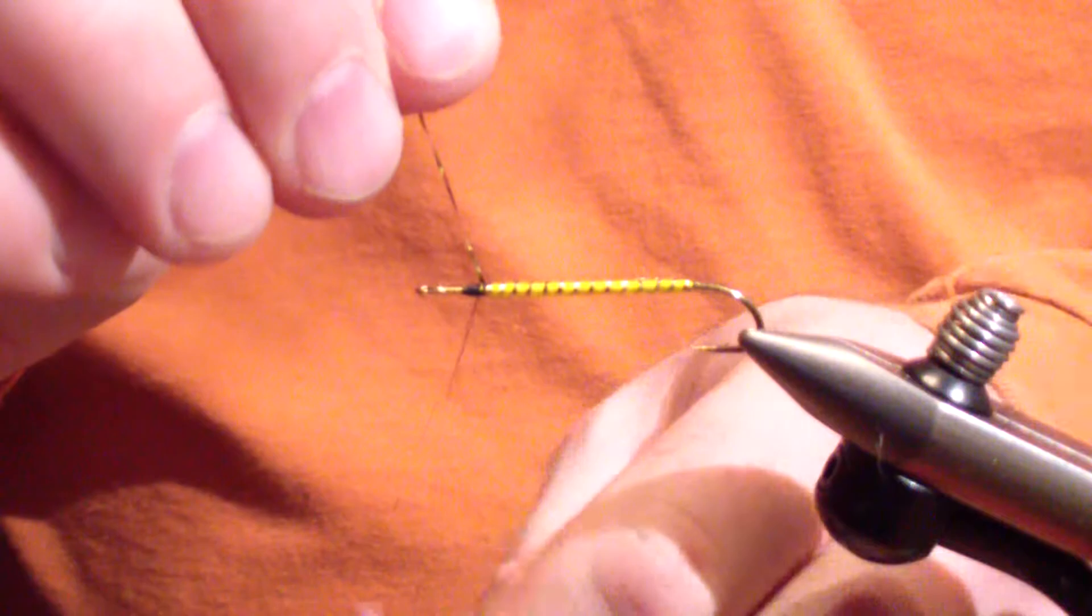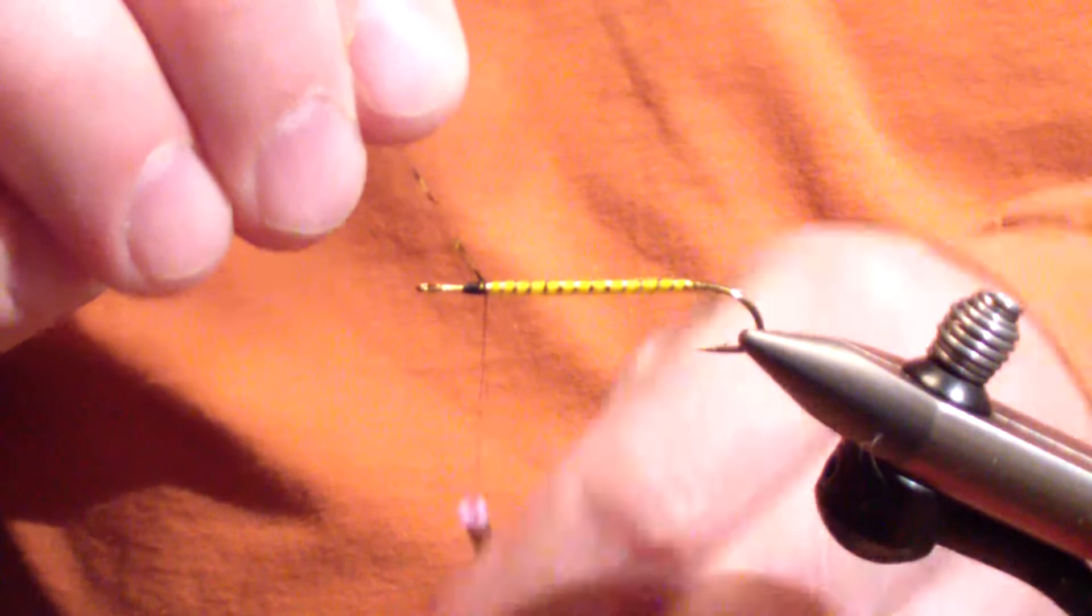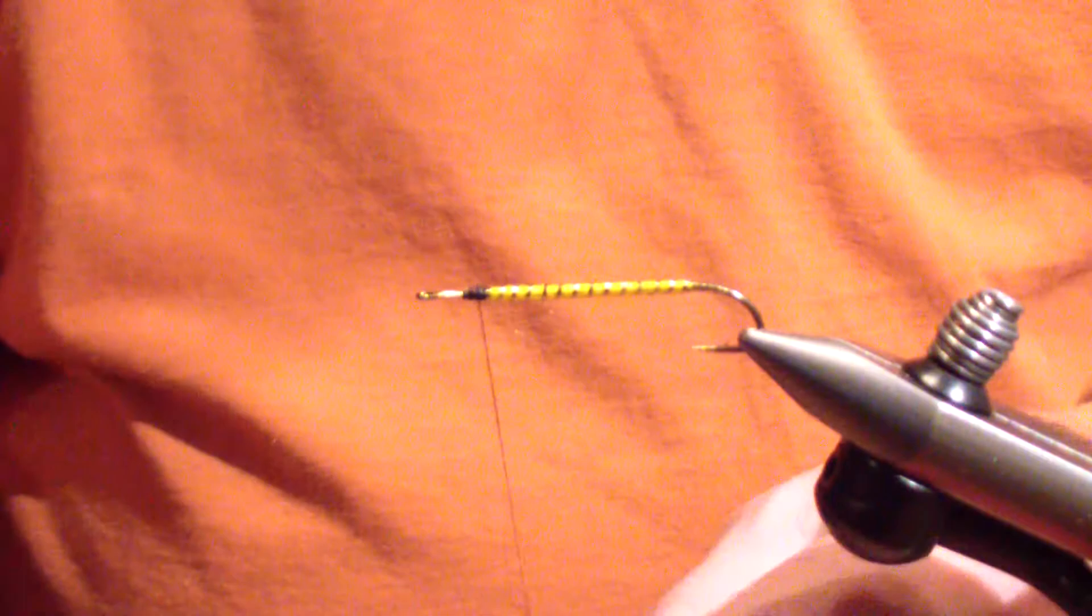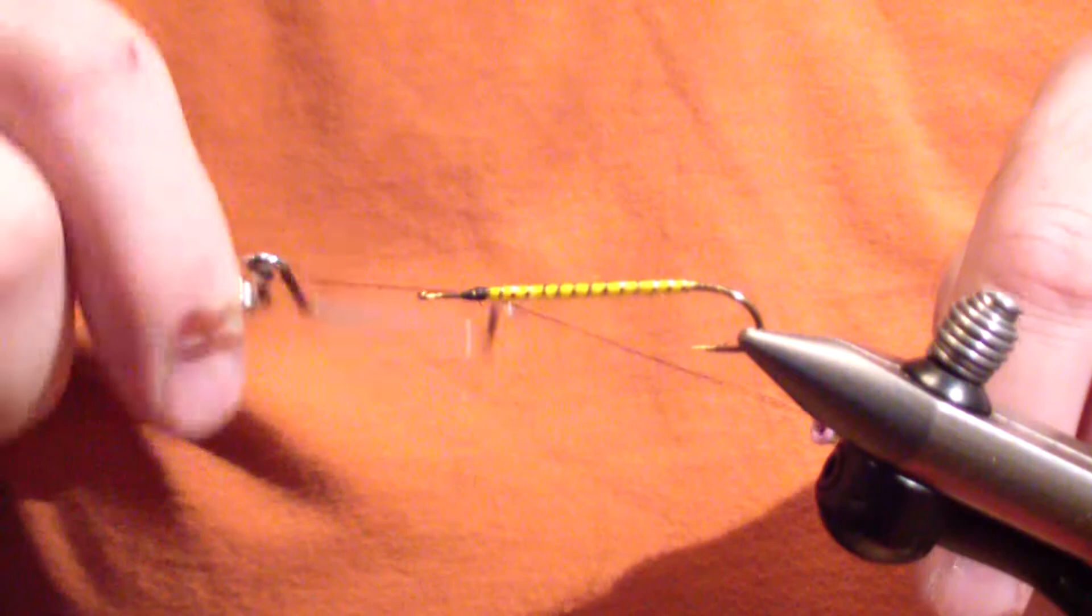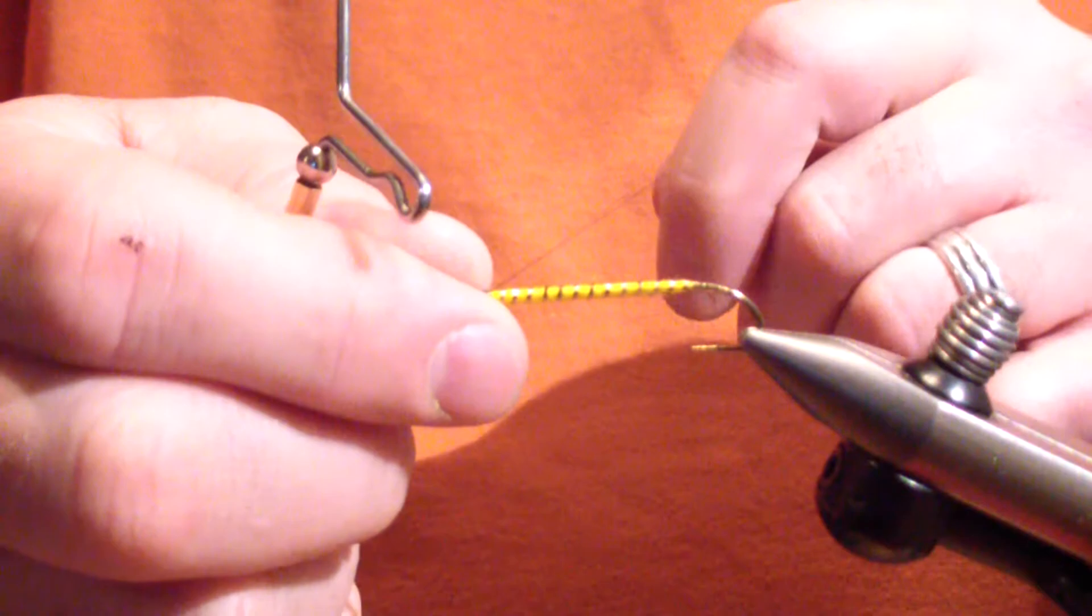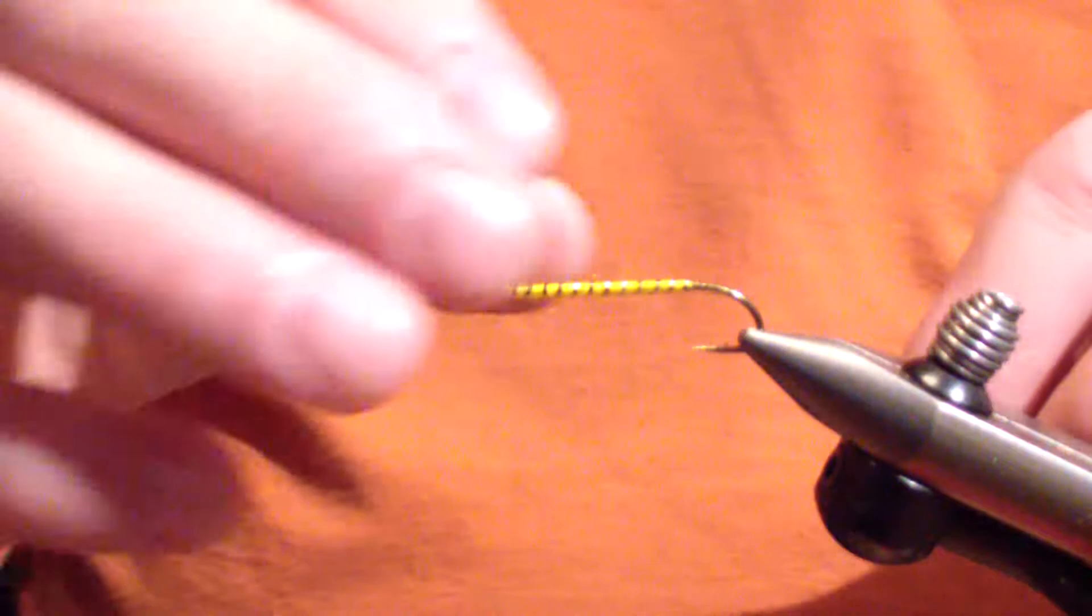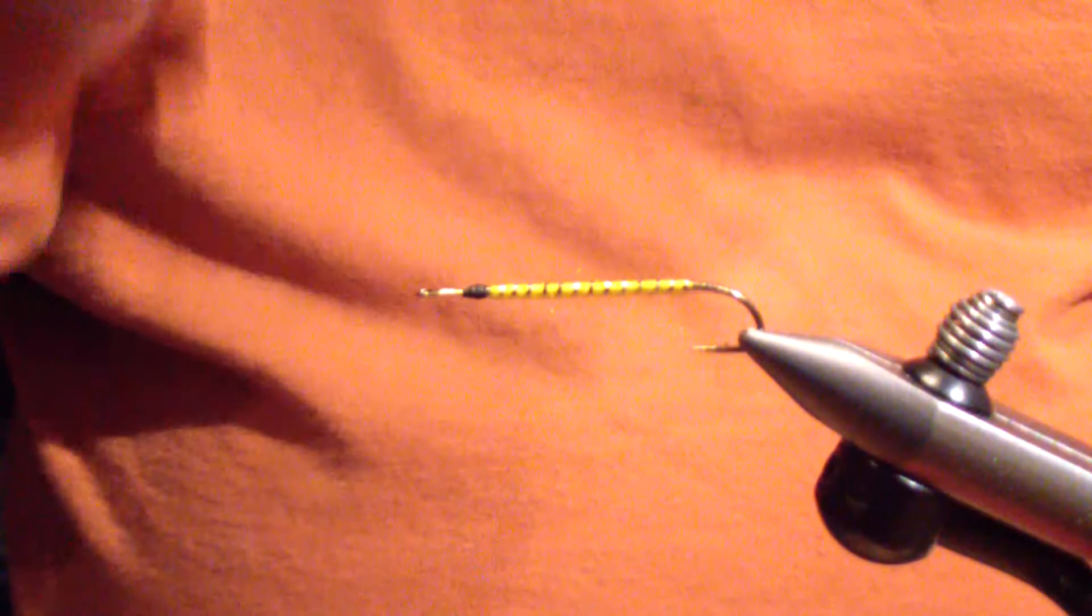I bring it right up to the back and tie off. At this point again on my streamers you'll see I do this quite a bit, I just put a quick whip finish in to lock everything in place. With the body finished, next you're going to tie in your throat.